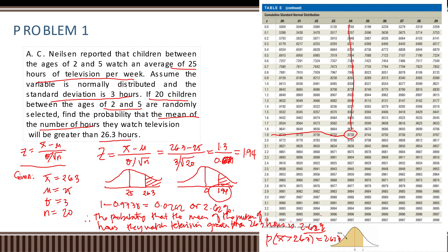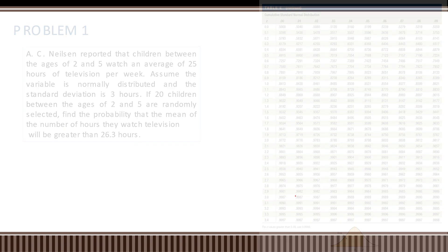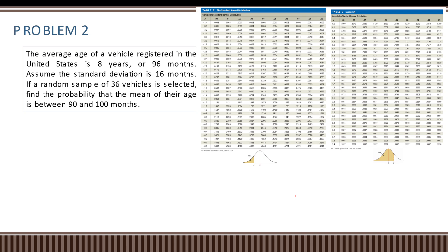Let us proceed with problem number two. The average age of vehicles registered in the United States is 96 months. Assume that the standard deviation is 16 months. A random sample of 36 vehicles is selected. Find the probability that the mean of their age is between 90 and 100 months.